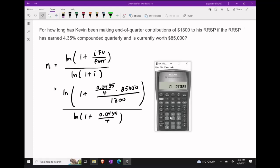Let's hit the equal sign and apply the logarithm to this number. We next need to divide by bracket 1 plus .0435 over 4, close that bracket, apply the logarithm, and then let's hit equals.